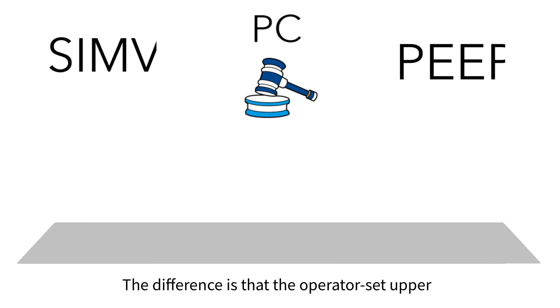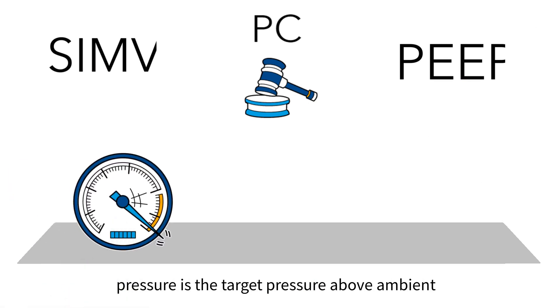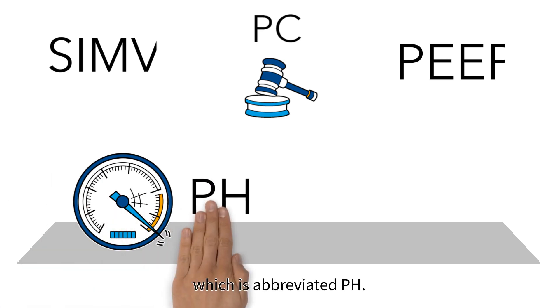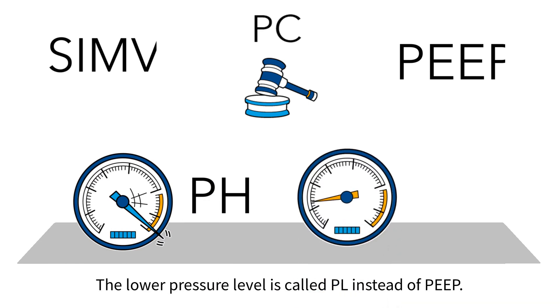The difference is that the operator set upper pressure is the target pressure above ambient rather than above PEEP, and it is called high pressure, which is abbreviated PH. The lower pressure level is called PL instead of PEEP.